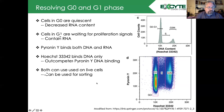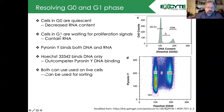The nice thing about this is that both dyes can be used on living cells and therefore can be used to sort the G0 from the G1 peak if you're looking to characterize quiescent from active cells. Looking at the histogram, the G0/G1 peak cannot be resolved. But if we look at Pyronin Y versus Hoechst, we can now resolve the G0 and G1 peaks based upon their RNA content.